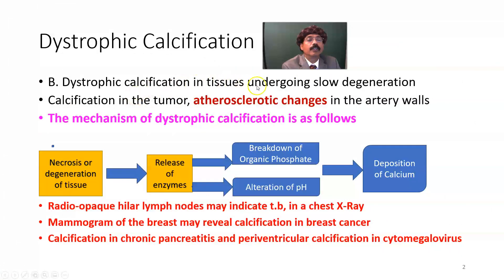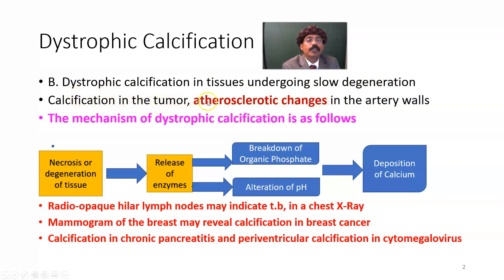Dystrophic calcification also occurs in tissues undergoing slow degeneration, such as damaged tissue going through slow degeneration, calcification in tumors, and atherosclerotic changes occurring slowly. However, in caseous necrosis, calcification goes rapidly.